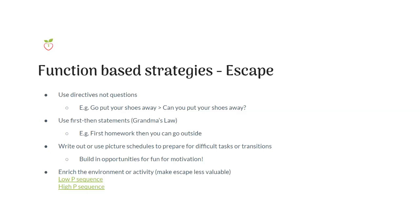The next strategy is using first-then statements — what we call grandma's law. 'First you do your homework, then you can go outside.' Let them know what they'll get if they do the non-preferred task. You can also write out or use picture schedules to prepare for difficult tasks or transitions, with built-in opportunities for fun or motivation. Alternate fun activity, work task, fun activity, work task — so they always have something positive to look forward to.